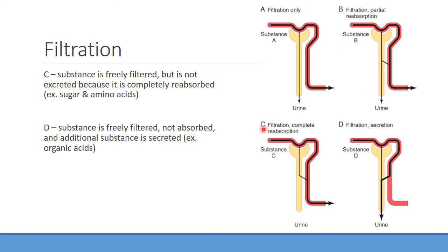In situation C, a substance is filtered but completely reabsorbed — nearly nothing appears in the urine. Glucose is a key example: freely filtered at the glomerulus but almost entirely reabsorbed, which is important because we don't want excess glucose in the urine. Amino acids behave similarly — you shouldn't find much protein or amino acids in the urine because they get reabsorbed. The question is: if you keep increasing the glucose concentration, can you ever overwhelm this reabsorption process?